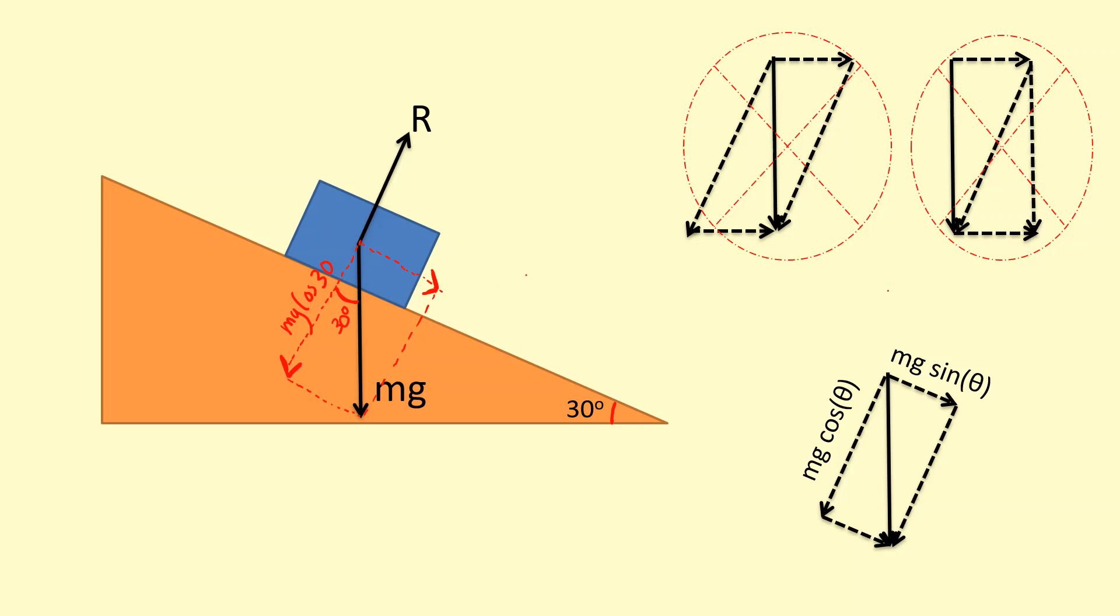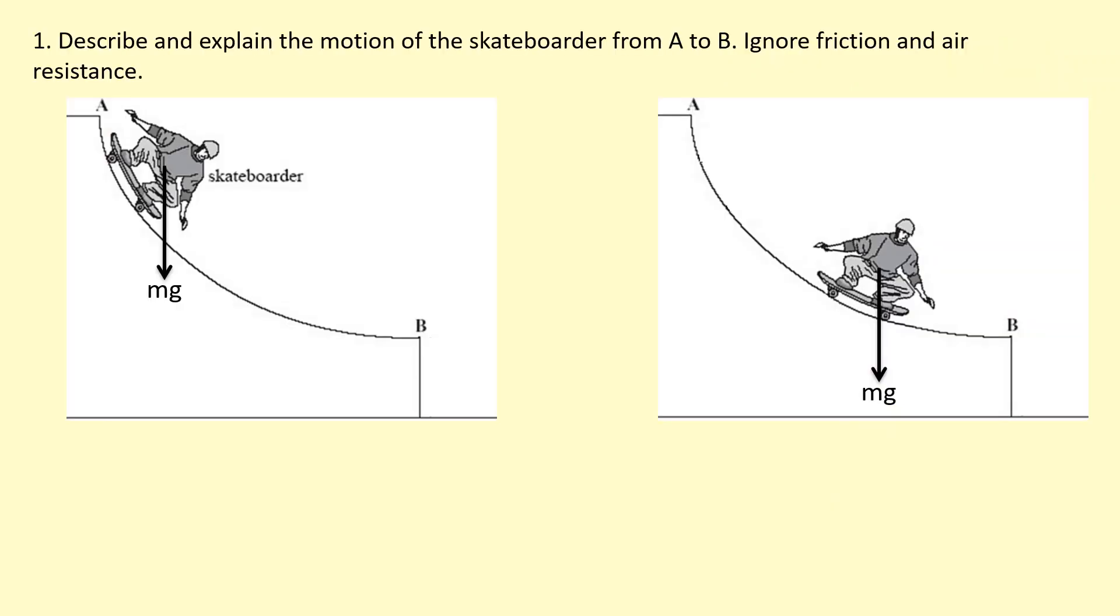Okay, describe and explain the motion of the skateboarder from A to B. So in both cases, to figure out what's going to happen, you need to resolve the weight of the skateboarder parallel and perpendicular to the slope. If we resolve it parallel and perpendicular to the slope, you should see that I'm trying to get a 90-degree angle here, and I'm looking for a rectangle like so.